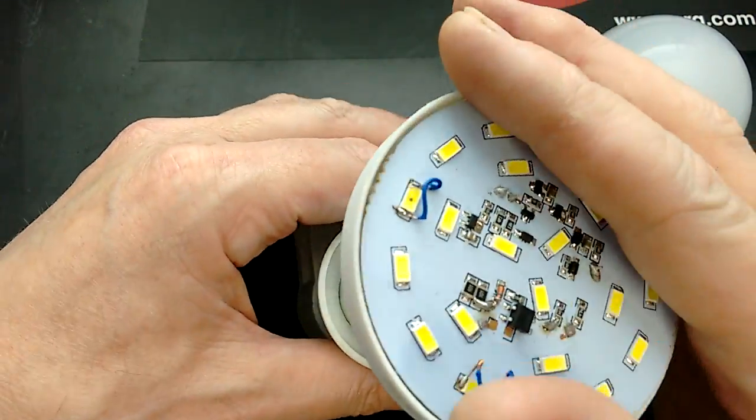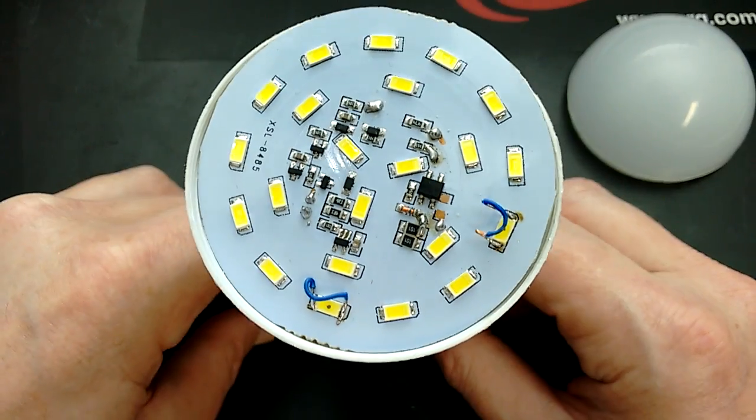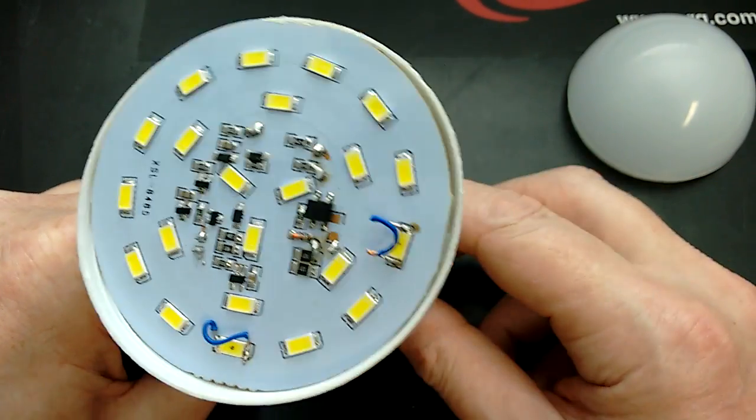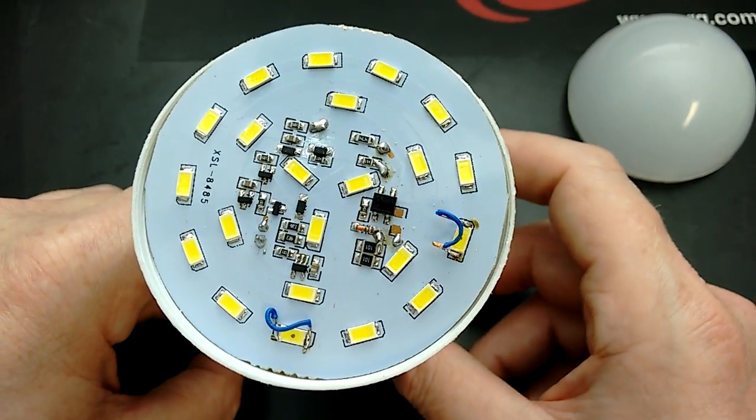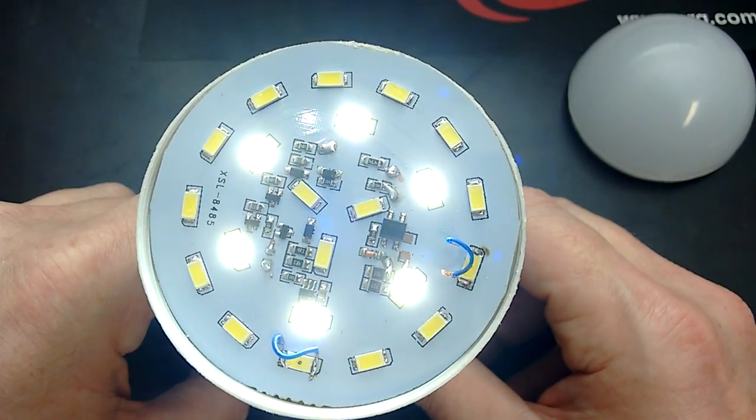But the idea is that it charges in normal use and then when there's a power cut, if you leave it in the lamp holder, then as long as the switch is turned on for that lamp holder, it will then light up like this under emergency power from the internal battery.